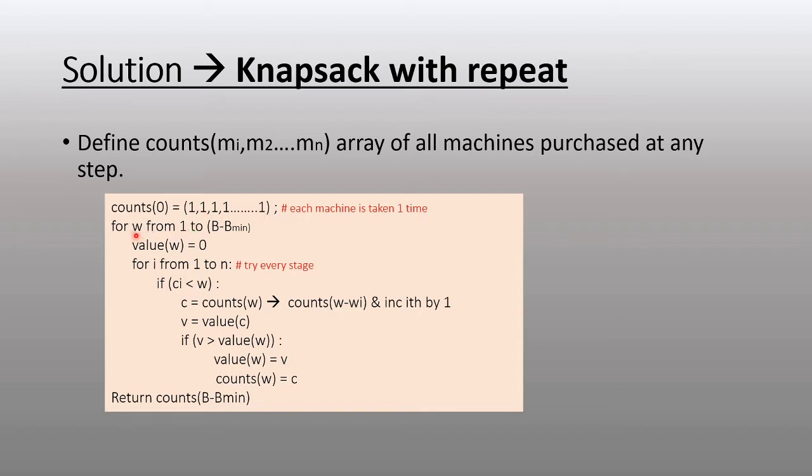From here, we can start our loop from one to B minus Bmin. We're assuming that the budget can be incremented by one, and B minus Bmin is the extra budget to buy other machines. We start with a function called value, which will compute the best probability of success.